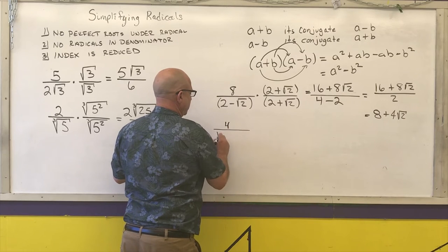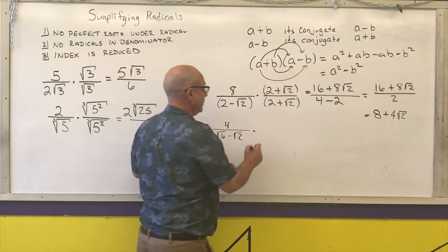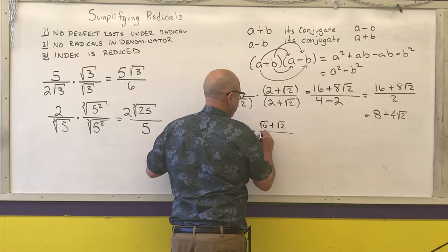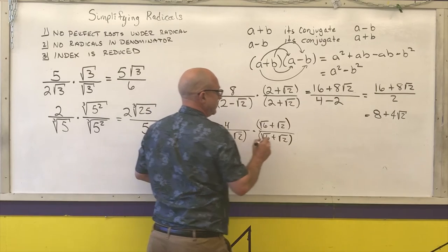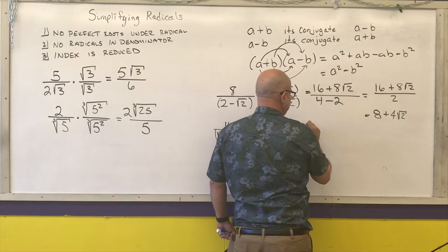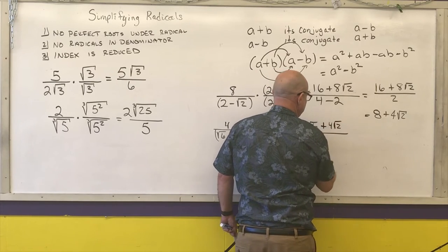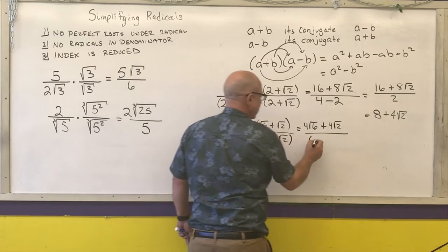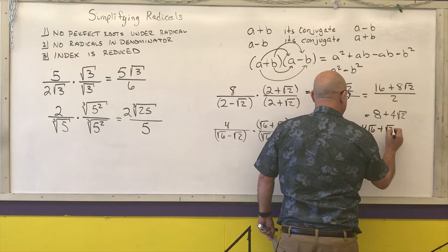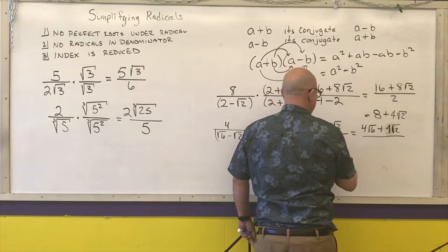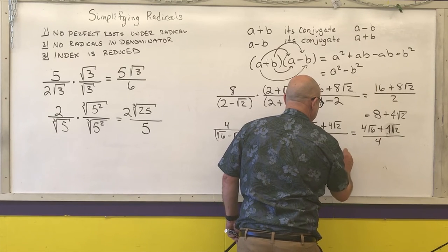Last example: 4 over (square root of 6 minus square root of 2). Multiply numerator and denominator by the conjugate (square root of 6 plus square root of 2). The top becomes 4 root 6 plus 4 root 2. The denominator is the first term squared minus the last term squared: 6 minus 2 equals 4. So I have (4 root 6 + 4 root 2) over 4. The 4s cancel, giving the square root of 6 plus the square root of 2 as the final answer.